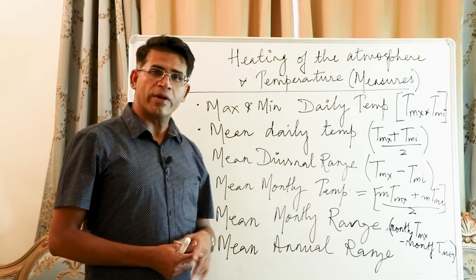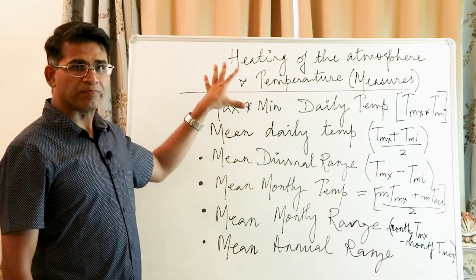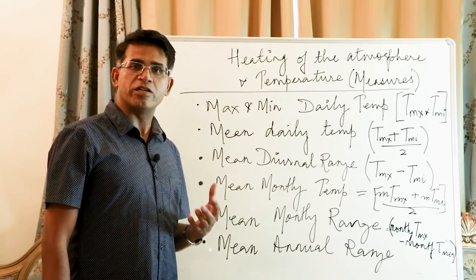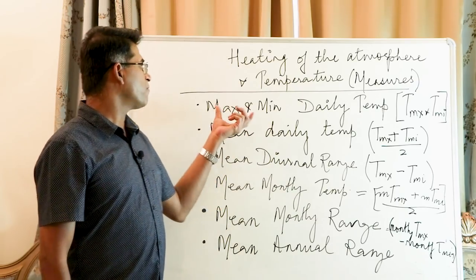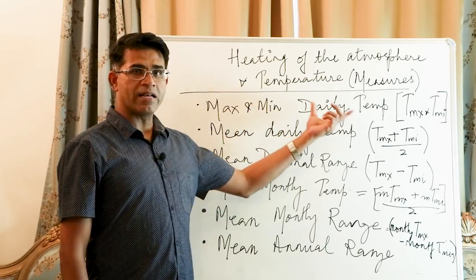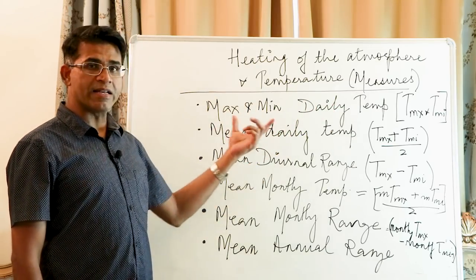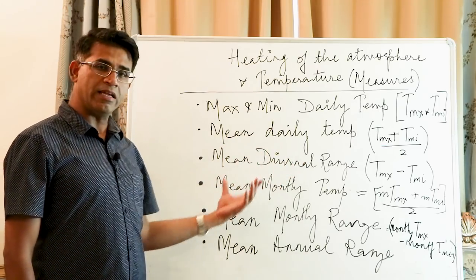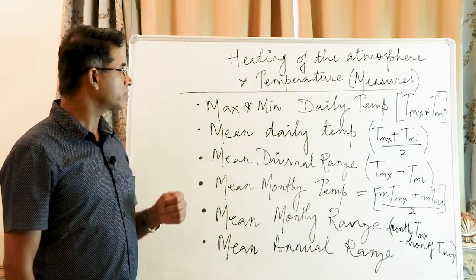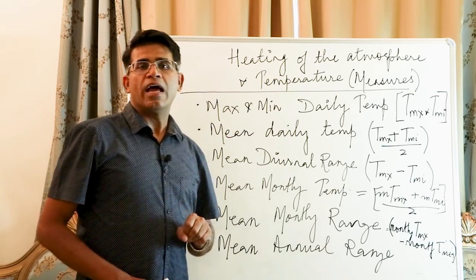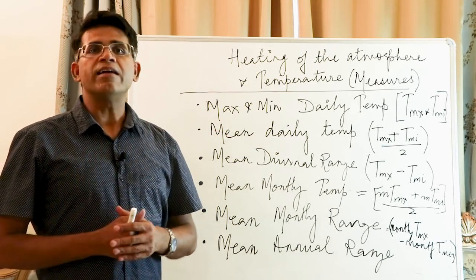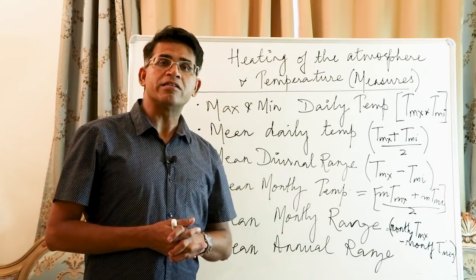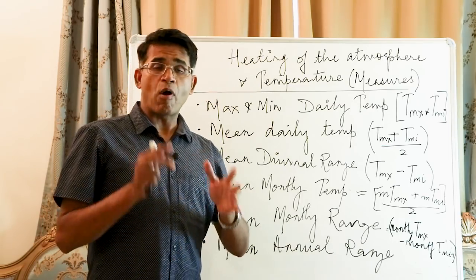There are about five or six measures of temperature: maximum and minimum daily temperature, mean daily temperature, mean diurnal range, monthly range, annual range, and so on. Essentially, in a given day there is some moment when temperatures are at their maximum — that's important to note.